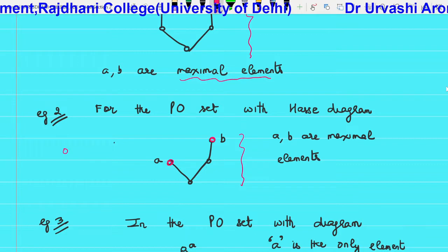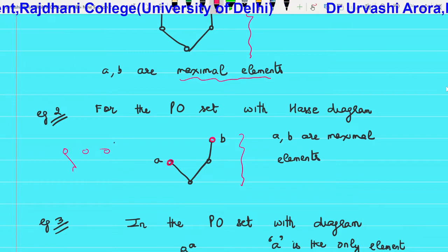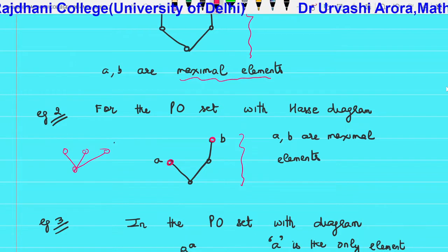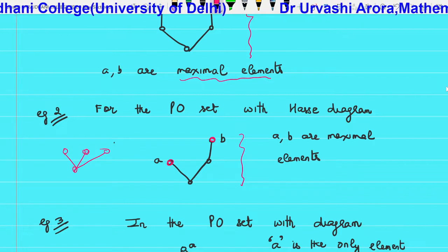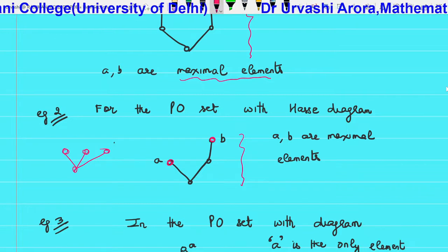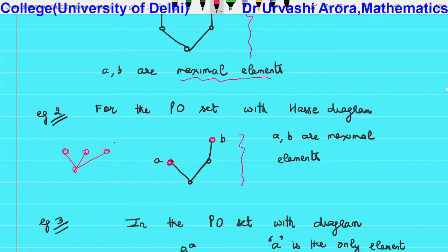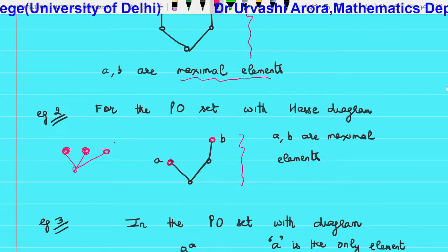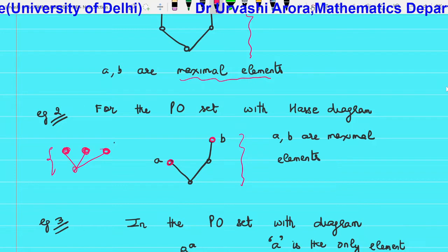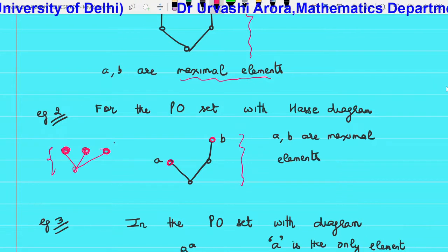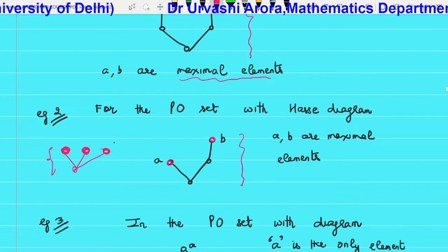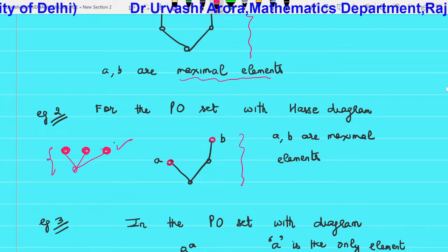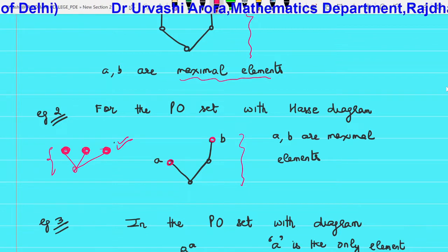You can also have PO sets with three maximal elements. In this next example there are three maximal elements at the top. These three elements are such that no element of the PO set lies above them. These three darkened elements at the top of this particular PO set are the maximal elements.